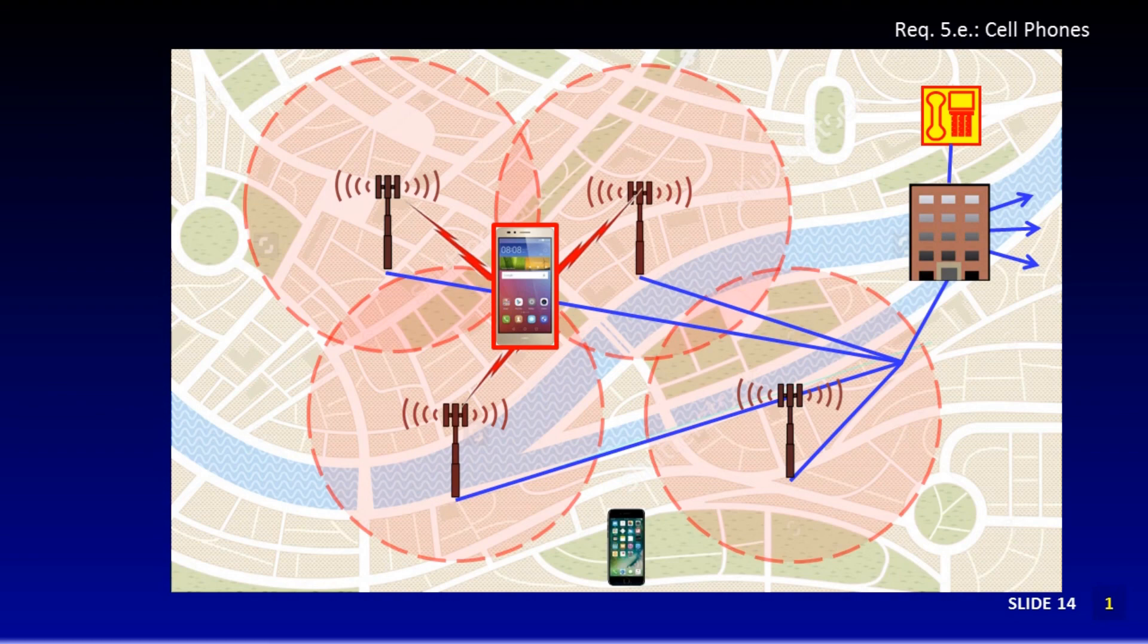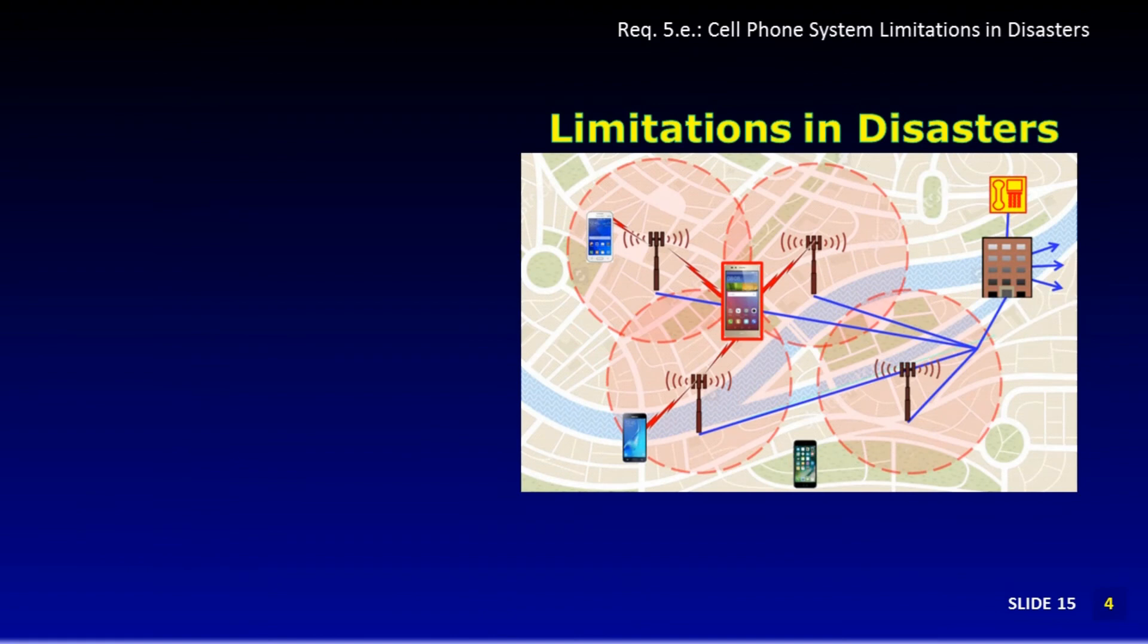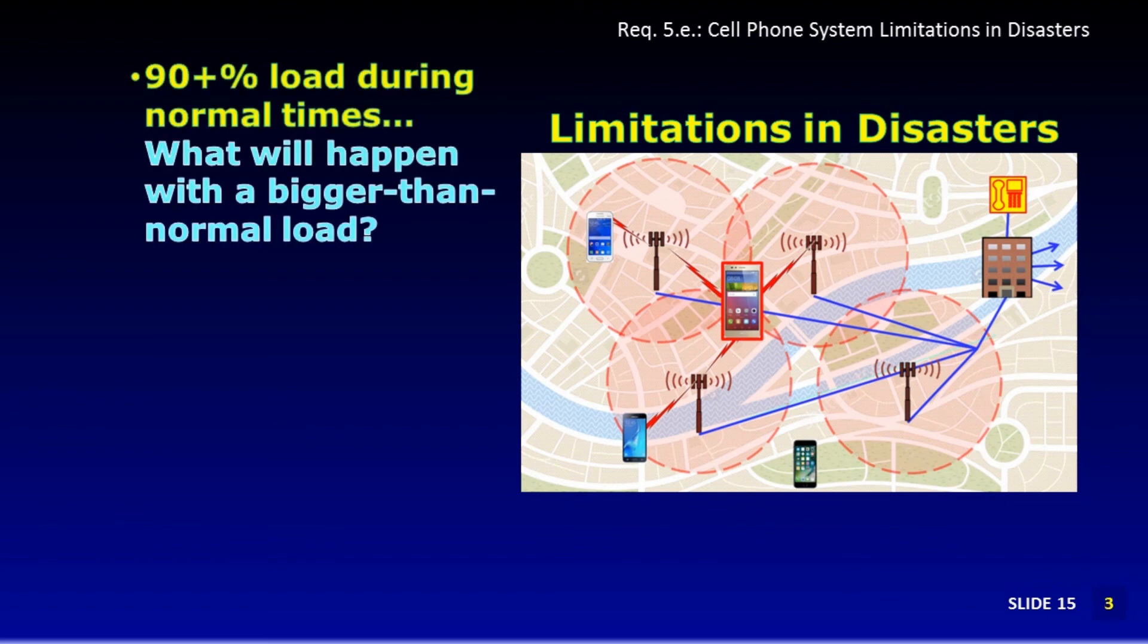We could talk a lot about the differences between using mobile phones and ham radio during disasters. But let's look at some big differences. Cellular systems during normal use are handling large numbers of regular calls, around 90% load. We've learned that cell systems are quickly overloaded when a disaster occurs. If twice as many people tried to access the mobile phone network, it would be loaded at 180%. It won't work.